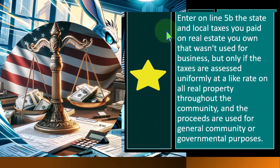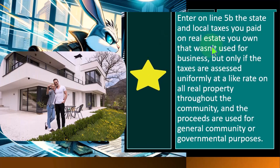Okay, let's take a look at that one more time. Enter on line 5B the state and local taxes you paid on real estate — so we're basically talking about property taxes, real estate taxes, usually on the home because that's the property that most individuals own — but we're talking real estate taxes that wasn't used for business.